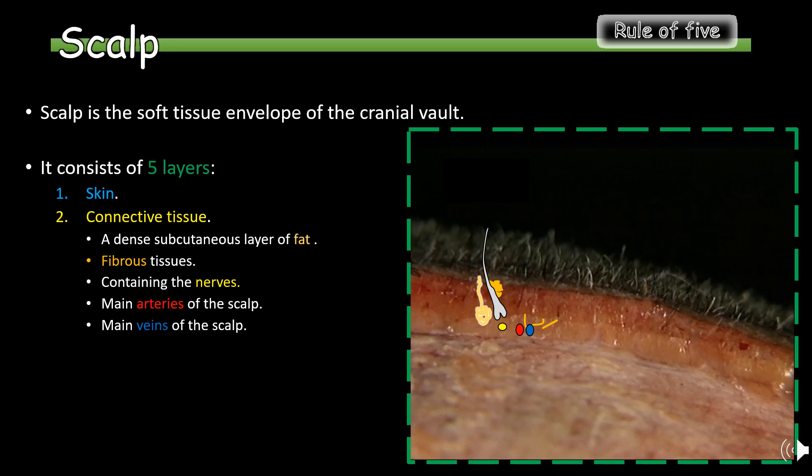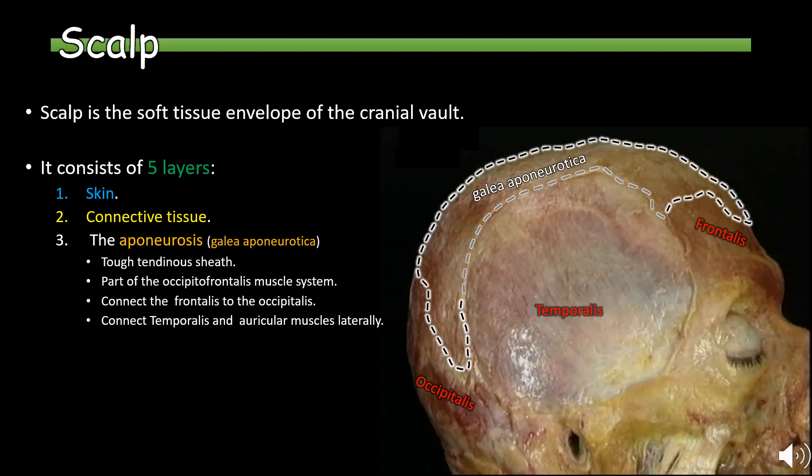The second layer, connective tissue, is a dense subcutaneous layer of fat containing fibrous tissues. This layer contains nerves and the main arteries and veins of the scalp. The third layer, the aponeurosis — also known as galea aponeurotica — is a tough tendinous sheath that is part of the occipitofrontalis muscle system.